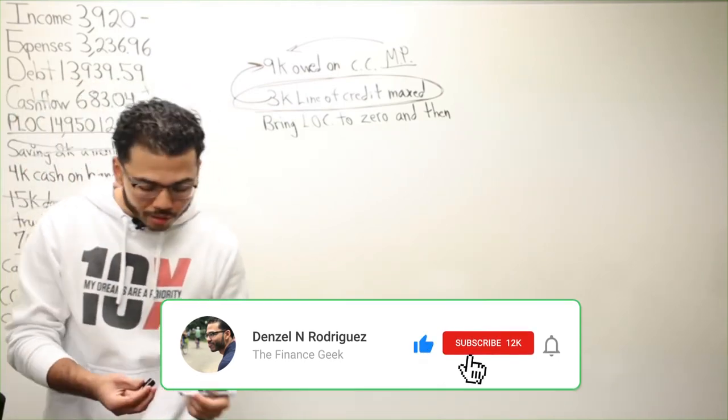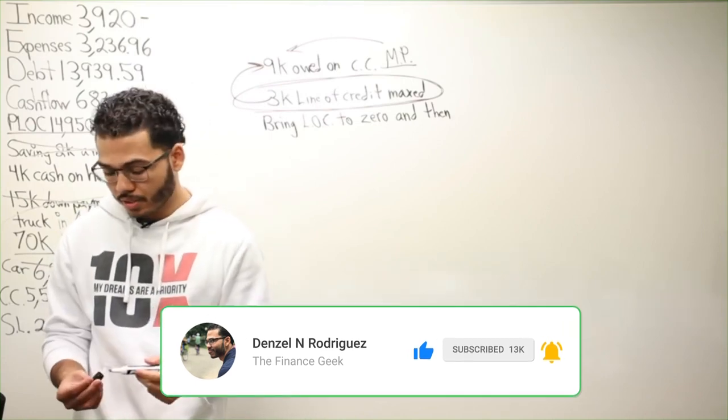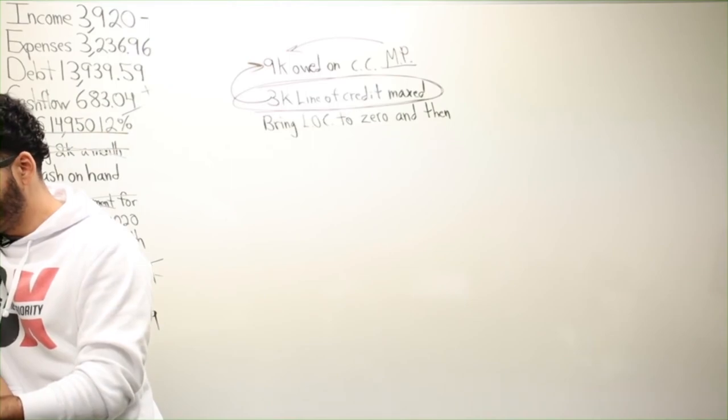If you're making two, three thousand a month, it might take you a little while. If you're cash flowing a couple hundred bucks, it might take you a while. Yeah, six to seven months, whatever it is. But that's what you get for investing with debt.